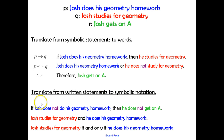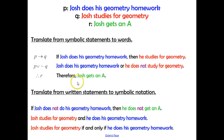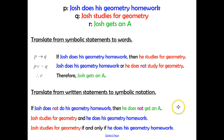Now we translate from written statements to symbolic notation — color coded here to help you. 'If Josh does not do his homework' is our P statement negated because of that not. 'Then he does not get an A' is our R statement, negated. Because this is an if-then form, we write: not P → not R.